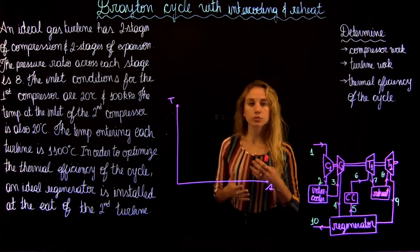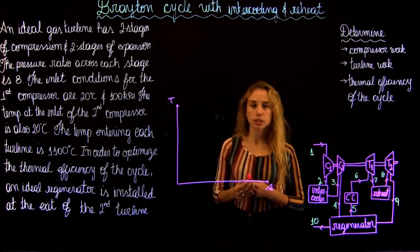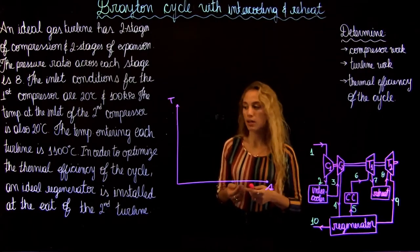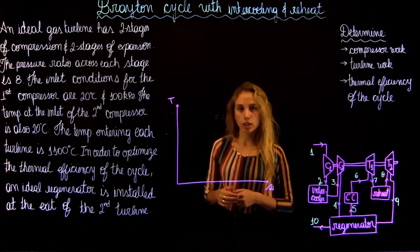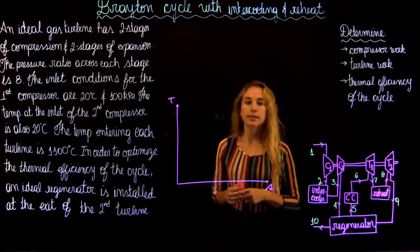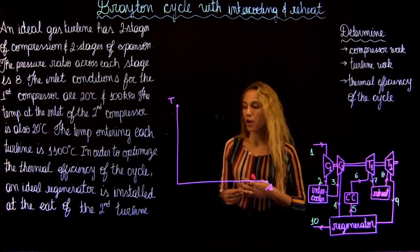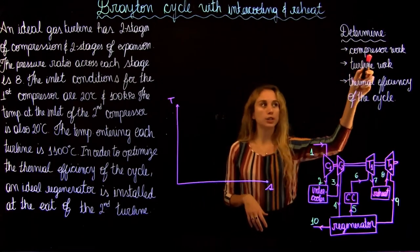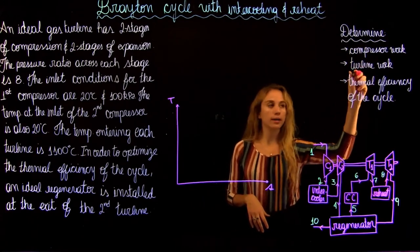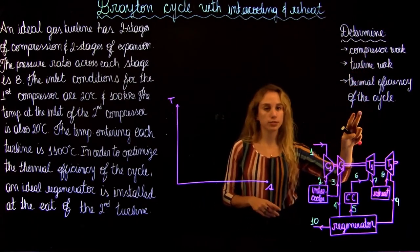In order to optimize the thermal efficiency of the cycle, an air-to-air regenerator is installed at the exit of the second turbine. We are asked to find the work of the compressor and the turbine, and also to find the thermal efficiency of the cycle.